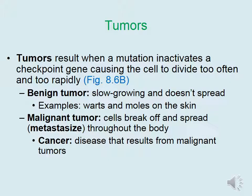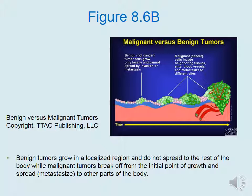A tumor results when a mutation inactivates a checkpoint gene, causing the cell to divide too often and too rapidly. There are two types of tumors: benign and malignant. A benign tumor is slow growing and doesn't spread — examples include warts and moles on the skin. A malignant tumor is one in which cells break off from the initial tumor and spread throughout the body, known as metastasis. Cancer is the disease that results from malignant tumors.